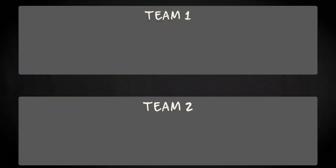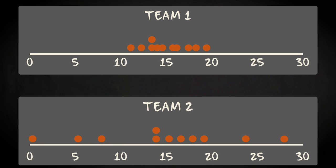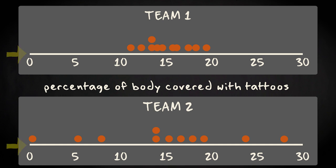Imagine two football teams. What you see here are dot plots, representing the distribution of the variable percentage of body covered with tattoos in these two teams. The horizontal line represents this variable, and the dots stand for the 11 individuals in each team.